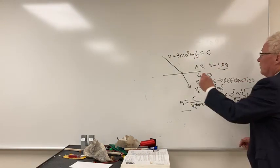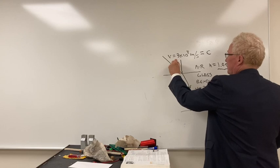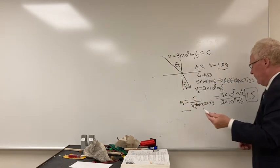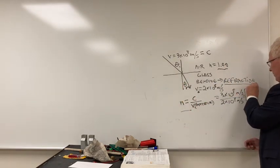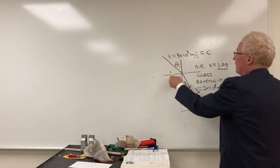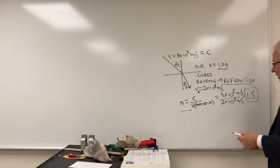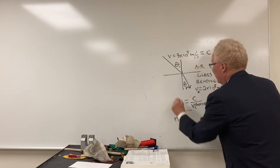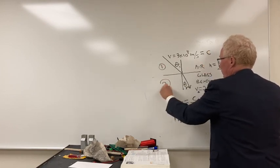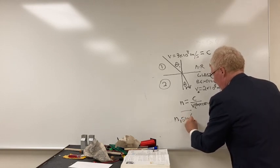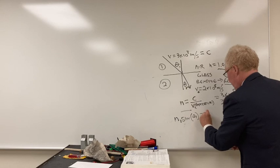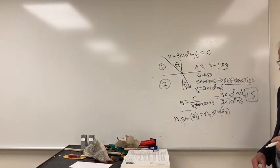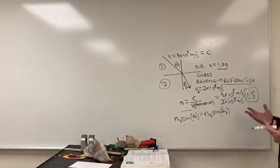We can measure this by the angle of incidence and the angle of refraction — not reflection, refraction. Light is going to go from one medium to another. This relationship is given as N1 sine θ1 equals N2 sine θ2, where medium 1 is where we're coming from and medium 2 is where we're coming out.